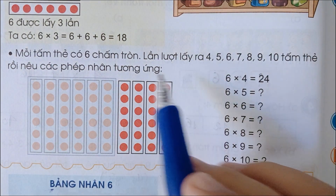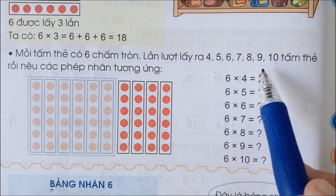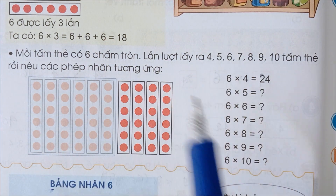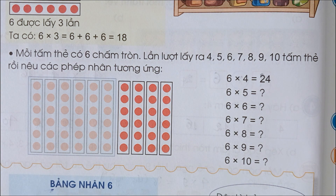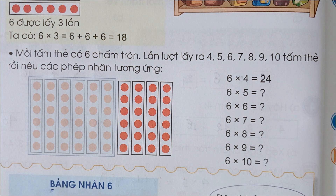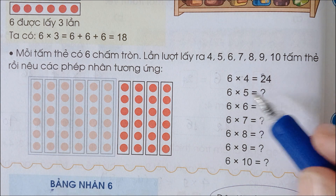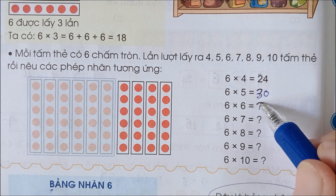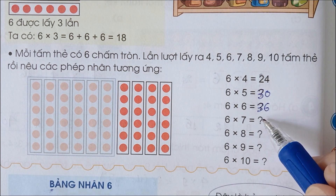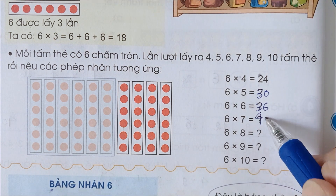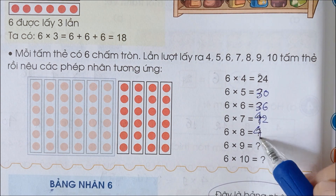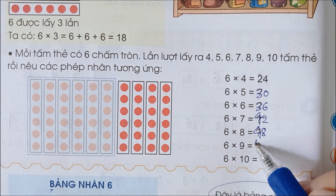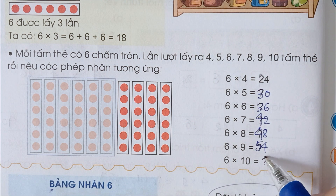Mỗi tấm thẻ có 6 chấm tròn, lần lượt lấy ra 4, 5, 6, 7, 8, 9, 10 tấm thẻ, rồi nêu các phép nhân tương ứng. Như vậy: 6 x 4 là 24, 6 x 5 là 30, 6 x 6 là 36, 6 x 7 là 42, 6 x 8 là 48, 6 x 9 là 54, 6 x 10 là 60.